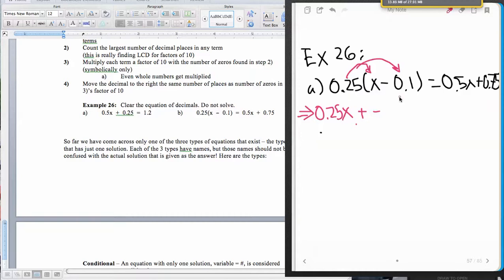And then 0.25 times 0.1. Well, 25 times 1 is pretty easy, right? And that's going to give me 25. And now I have 1, 2, 3 decimals total. So this is going to be 0.025. And that's what I mean by I make it easy on you when I do give you examples like this. And then we have on the right side of this equation 0.5x plus 0.75. Nothing happens there. We don't have any distributive property.